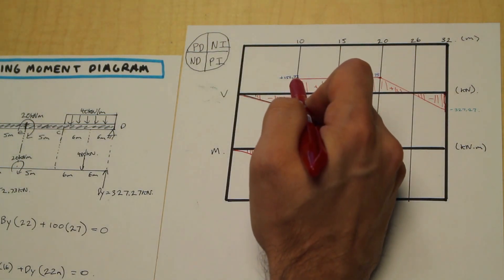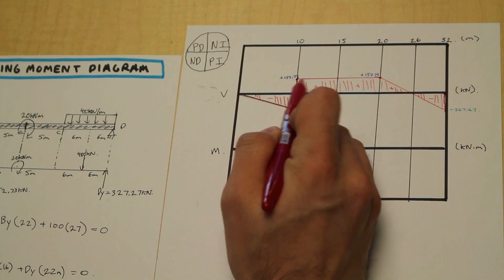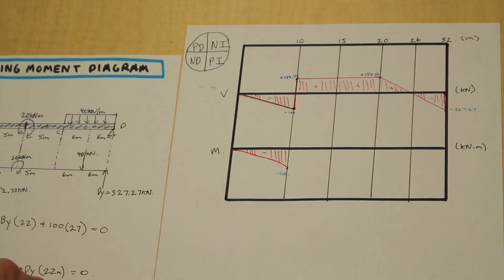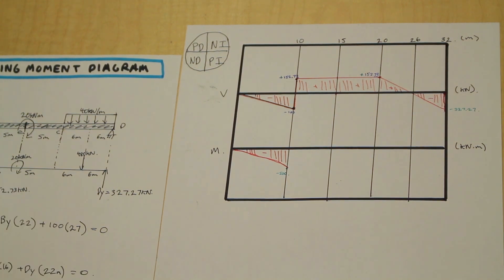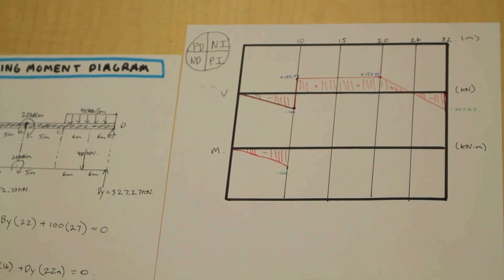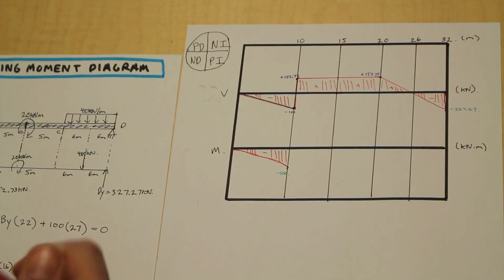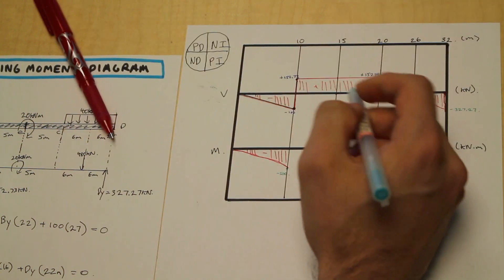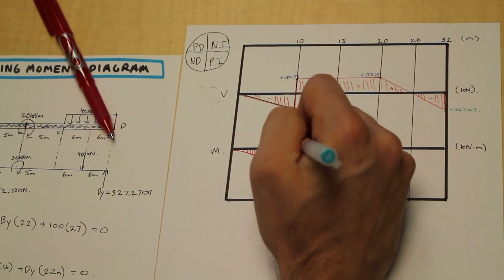So what do we have here? We have 152.73, that's the height of this rectangle, and the rectangle is 5 meters long. That gives us 763.65, that's the area under this rectangle. All we're going to do is add it to negative 500, and that's going to give us 263.65. That's positive.